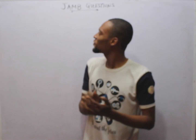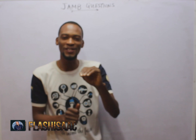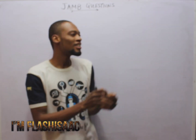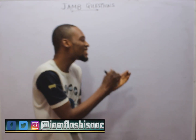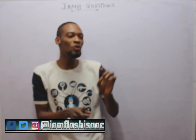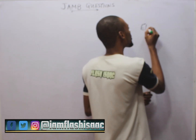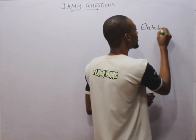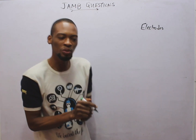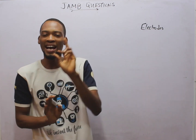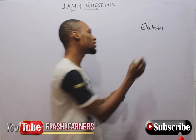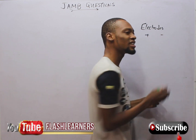I am Flash Isaac, and today I shall be taking you through JAMB past questions under electrolysis. Electrolysis is the passage of direct current through a compound in molten state or in solution, with decomposition occurring at the electrode. The electrodes are the cathode and anode. For an electrolytic cell, the anode is positive and the cathode is negative.